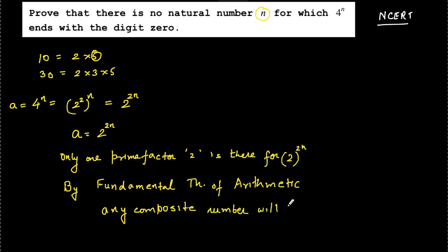What does it mean? It means that if you have expressed any composite number in terms of its prime factors, you cannot really find anything beyond that. So all the prime factors will be there in that expression.